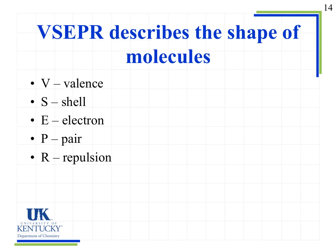We're going to look pretty briefly at VSEPR, which is valence shell electron pair repulsion. We're going to keep things simple here. This is talking about the shape or the geometry of molecules. Basically, those groups of electrons around an atom are going to try to get as far apart from one another as possible.